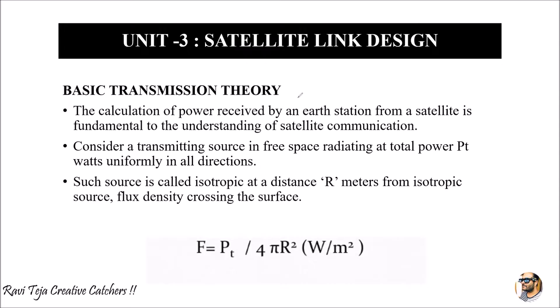A satellite is a machine placed above the earth moving in an orbit around it, used mainly for communication purposes. Earth stations or ground stations are large facilities installed with huge antenna systems that are able to communicate with satellites placed in orbit. The power received by the earth station when communicating with the satellite is fundamental to understanding satellite communication.